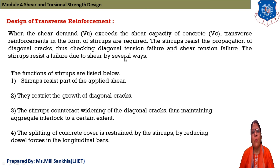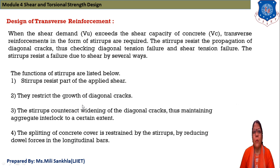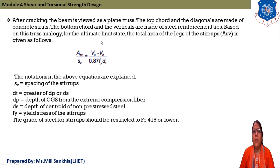The functions of stirrups are: first, stirrups carry part of the applied shear; second, stirrups restrict the growth of diagonal cracks; third, stirrups counteract widening of cracks and maintain aggregate interlock to a certain extent; fourth, stirrups prevent splitting of concrete cover; and fifth, stirrups reduce dowel forces in longitudinal bars. The ultimate aim of stirrups is to prevent diagonal cracking and maintain aggregate interlock.